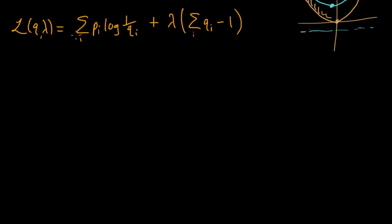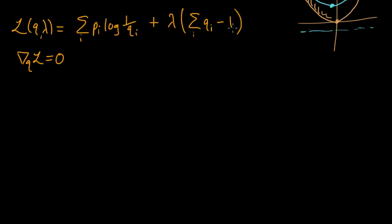What we're going to do is set the gradient equal to 0 — the gradient with respect to q equal to 0. We will also set the derivative with respect to lambda equal to 0. When we set that equal to 0, we just get back our constraint.